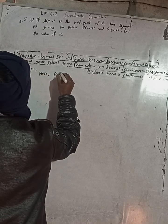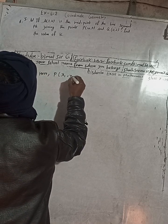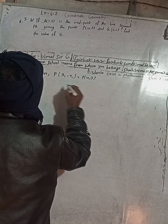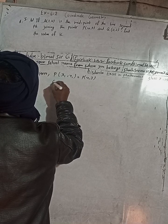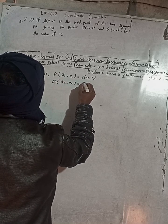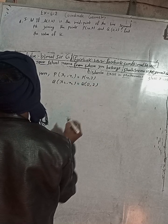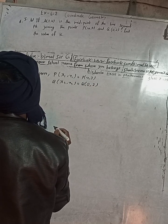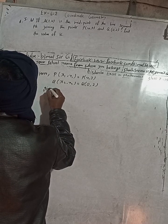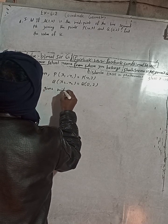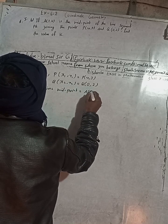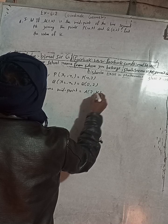Here, P(x1, y1) is given as P(4, 3) and Q(x2, y2) is given as Q(0, 2). The midpoint given is A(2, k).